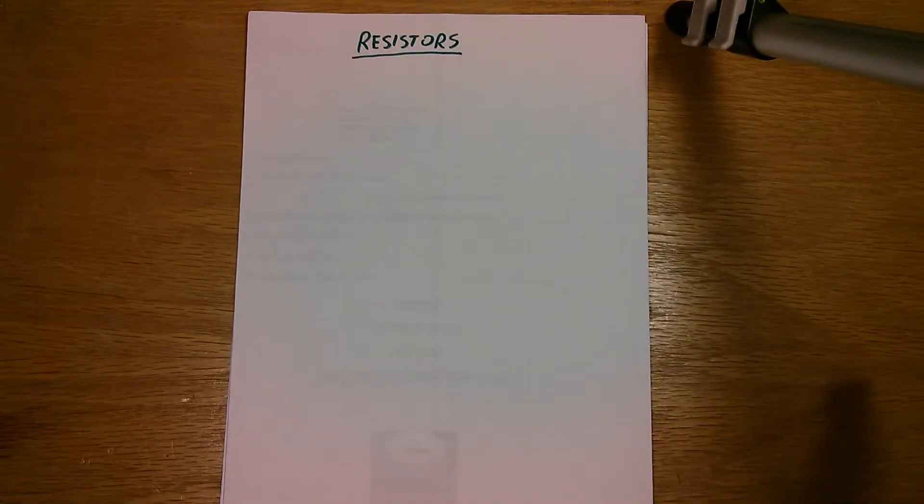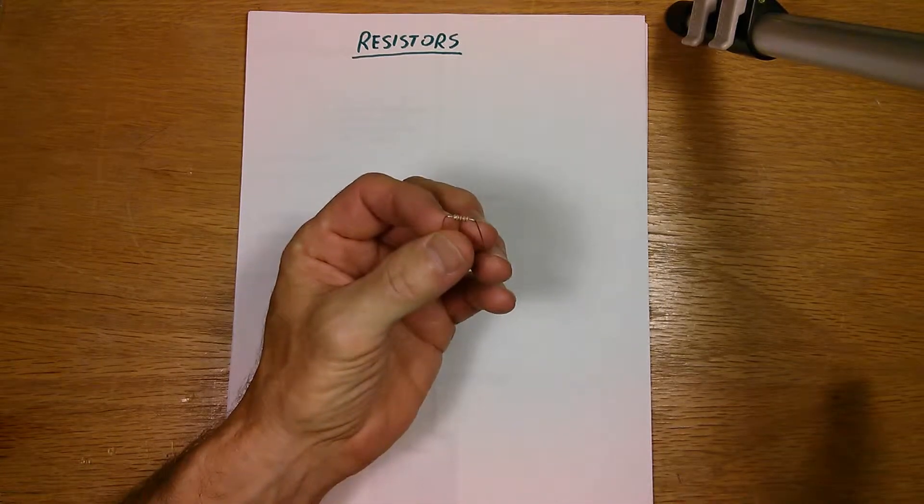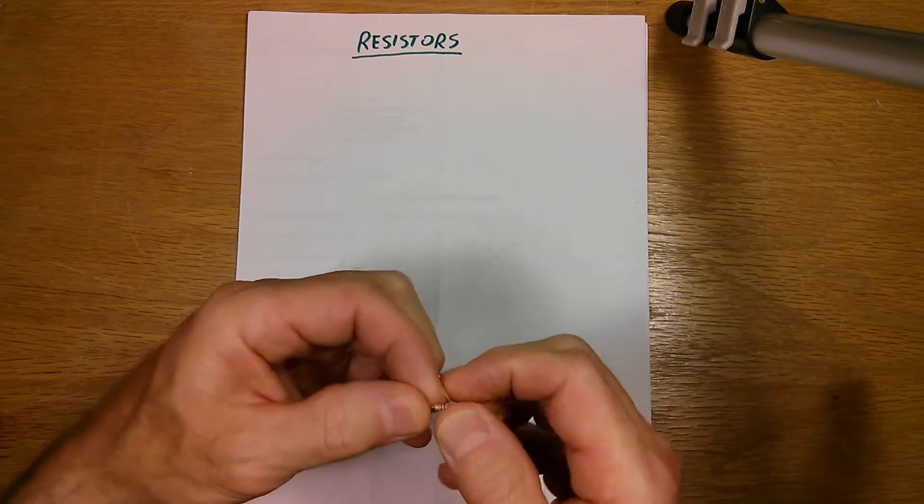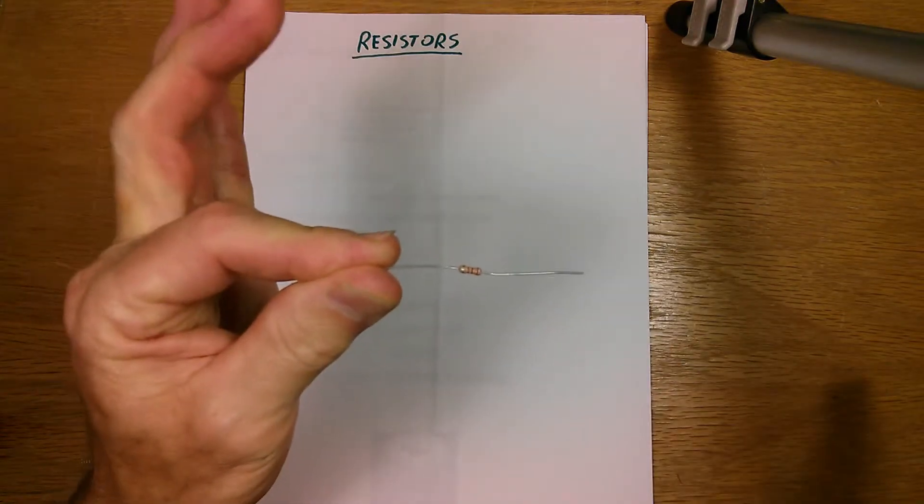But the most common resistors you're going to be using are these guys. This is a quarter watt carbon film resistor, pretty standard resistor. And they come like this with the two leads if you haven't seen them before.